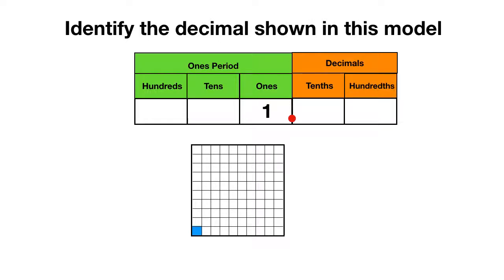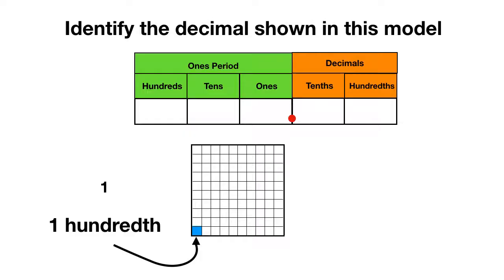One of these little squares can be called one hundredth. As a fraction, we write that it's one piece out of one hundred, and as a decimal, we write it as .01, because behind the decimal there are zero tenths but we have one little hundredth.